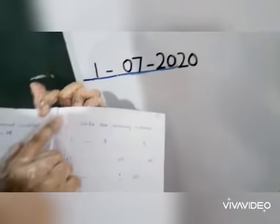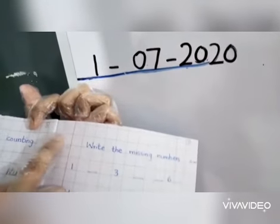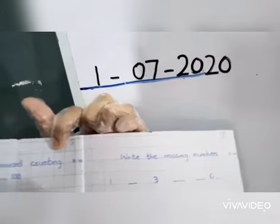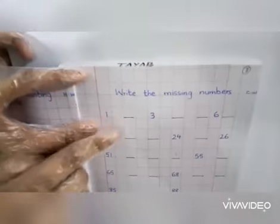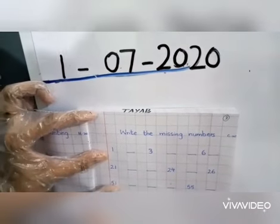Write down the date over here. And do this work. Write the missing numbers. Okay? So now we have to do this work.